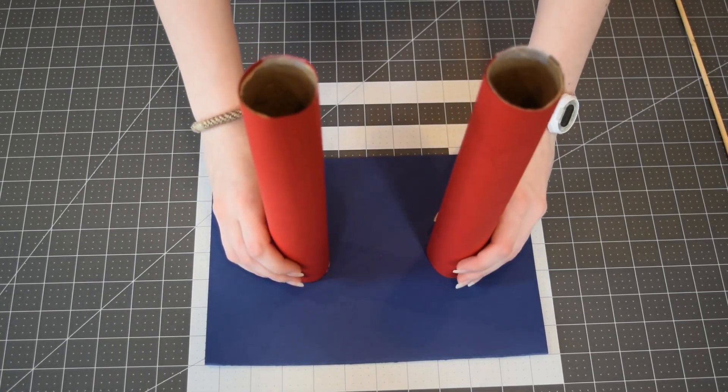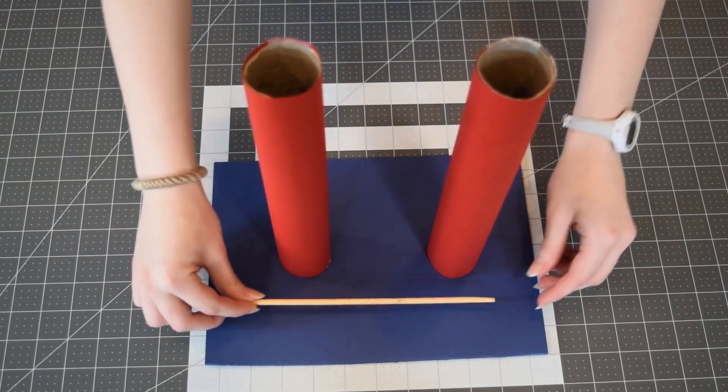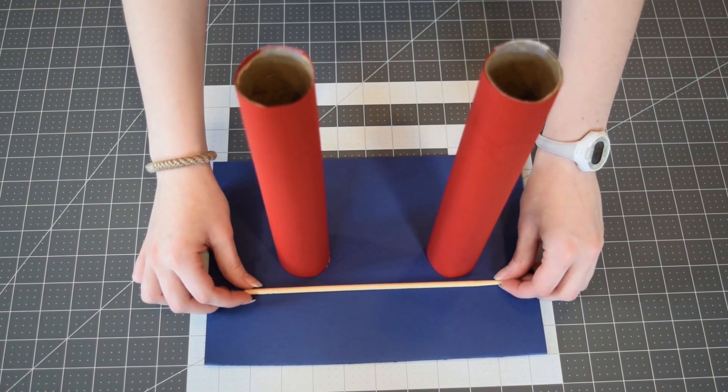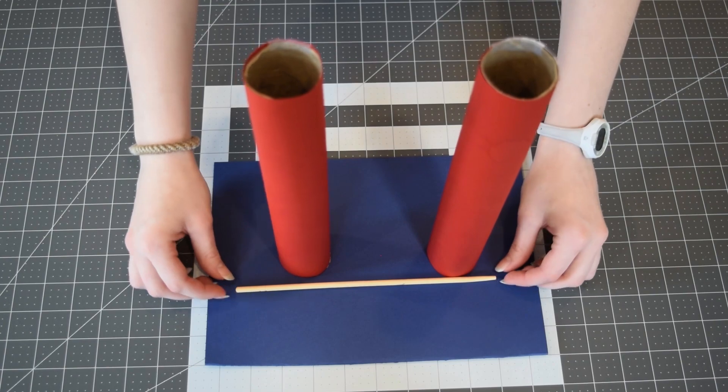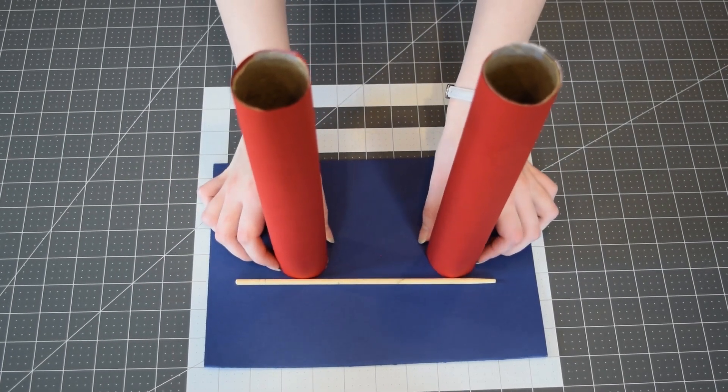We're going to start by attaching our paper towel rolls to our cardboard base. As you can see here, I decided to use a chopstick instead of a straw because it was longer, but use whatever you have at your house.